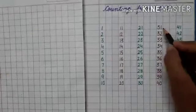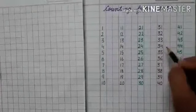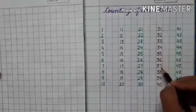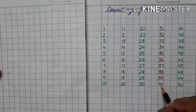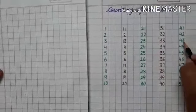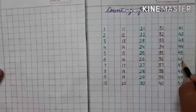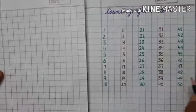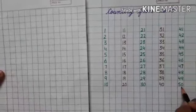31, 32, 33, 34, 35, 36, 37, 38, 39, 40, 41, 42, 43, 44, 45, 46, 47, 48, 49 and 50.